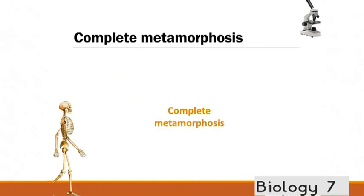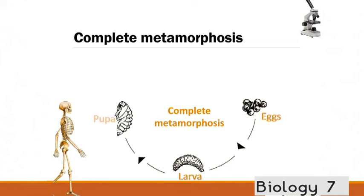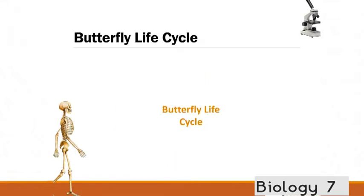In complete metamorphosis, this is a little bit different. Because there is a complete transition. So, from the eggs form a larva. And the larvae then will form a pupa. Prior to turning into an adult. So, there's a complete different change in the form of that animal. In complete metamorphosis.